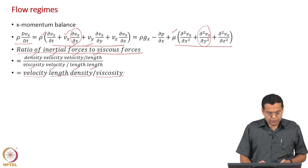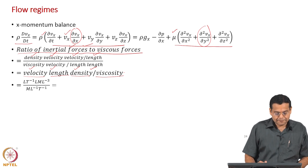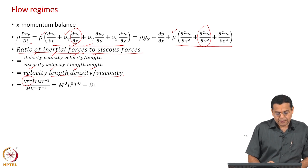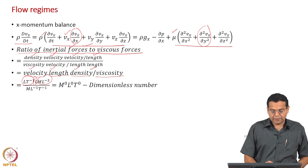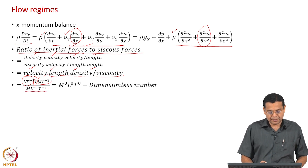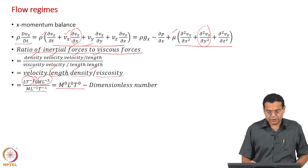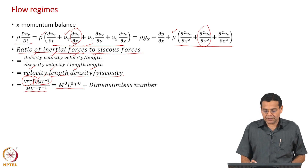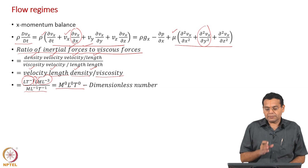Let us look at the dimensions of these physical quantities. Velocity is length per time, length is L, density is M·L⁻³, and viscosity in terms of dimensions is M·L⁻¹·T⁻¹. If you simplify, you get a dimensionless number — that is not surprising because these terms have been taken from the two sides of a conservation equation.